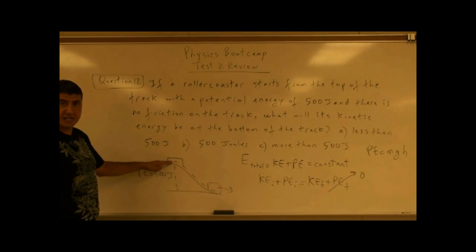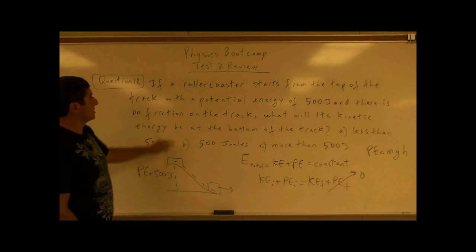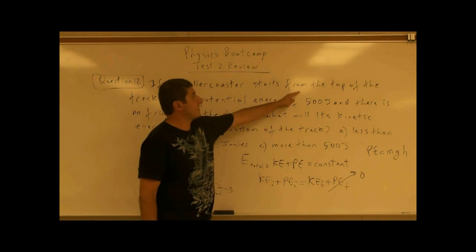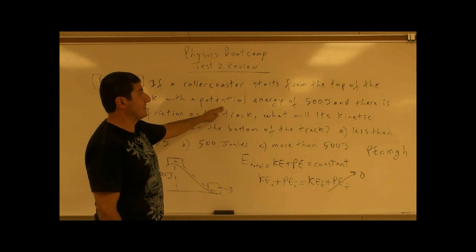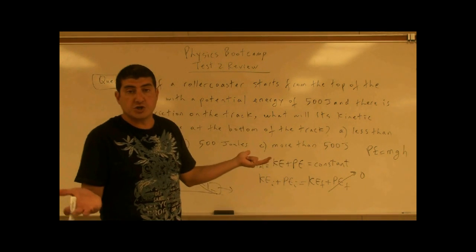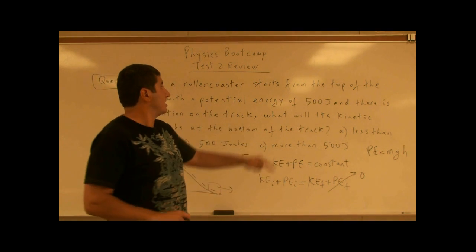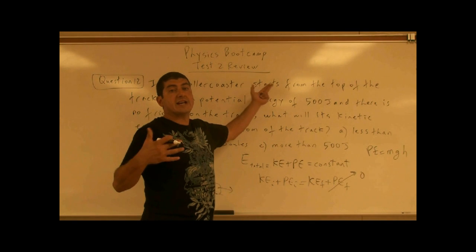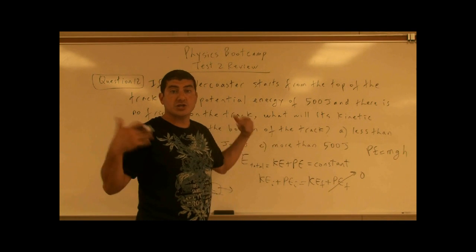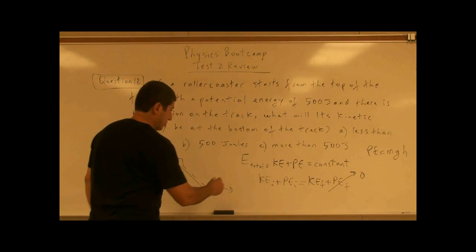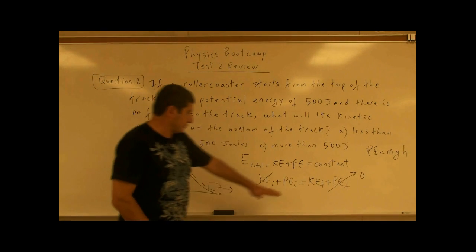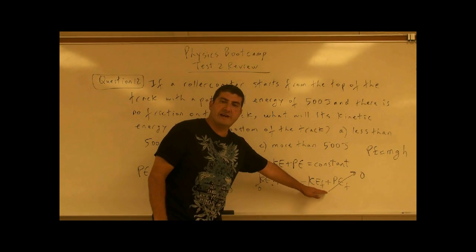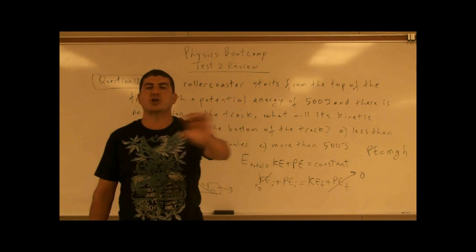The initial kinetic energy is also zero, because it says the roller coaster starts from the top of the track with a potential energy of 500 joules — there is no initial kinetic energy because it starts from rest with no initial velocity. So the initial kinetic energy is zero, which means the initial potential energy must equal the final kinetic energy. You basically have energy transformation.